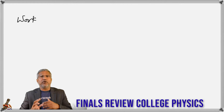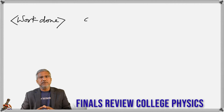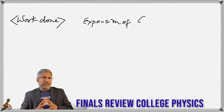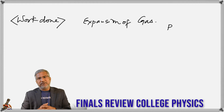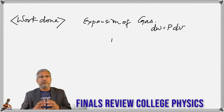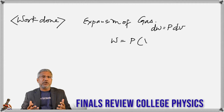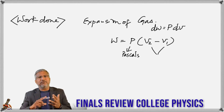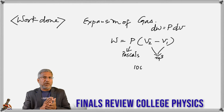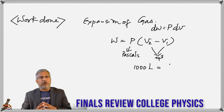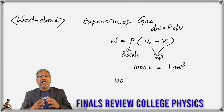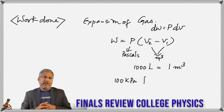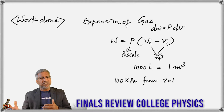Next we have work done during an expansion of a gas at constant pressure. The small work done is given by P·dV, but the total work done is pressure multiplied by change in volume — so it's P times (V2 − V1), where V1 is the initial volume and V2 is the final volume. Pressure must be in pascals and volume in cubic meters. It helps to know that 1000 liters equals one cubic meter.